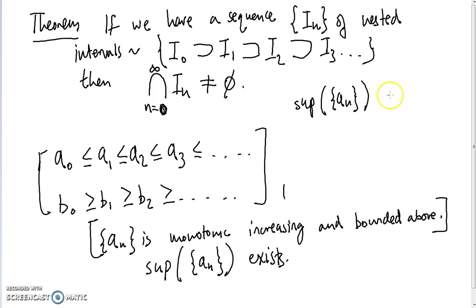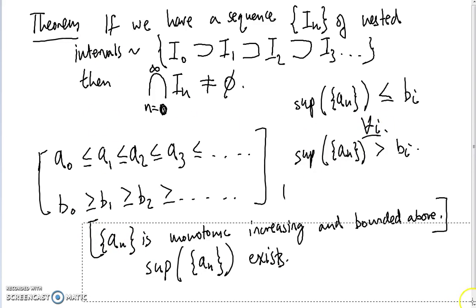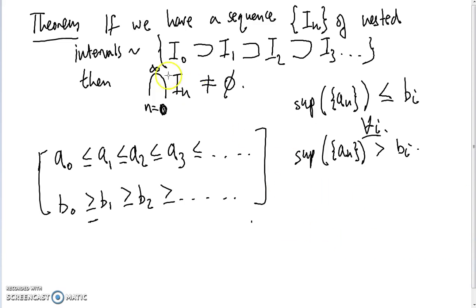Now all we have to do is show that the supremum of {a_n} is actually also less than or equal to b_i for all i. Well let's try this by contradiction. Let's suppose that the supremum of {a_n} is actually greater than b_i for some b_i. Well there's an interesting property that the supremum has which prohibits this, and that is we can find an a_k that is arbitrarily close to the supremum of this sequence.